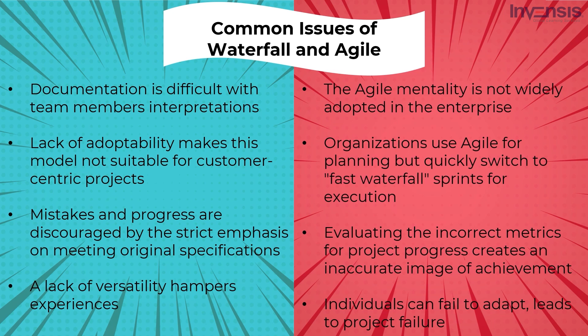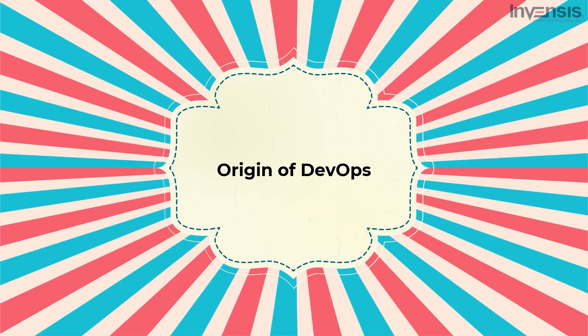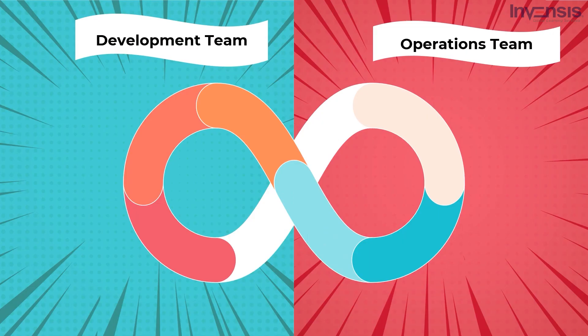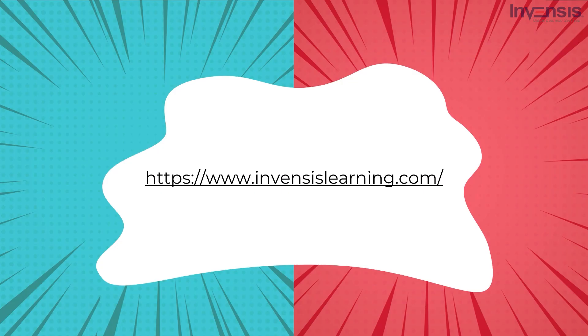Now we will discuss the solution to Waterfall and Agile models: DevOps. Several companies are now implementing the DevOps SDLC approach to resolve these issues. It takes the Agile concepts of quick and iterative software creation but focuses on collaborative, continuous, and automation-driven processes in software development, testing, deployment, and distribution. For more resources, visit our website, Invensis Learning.